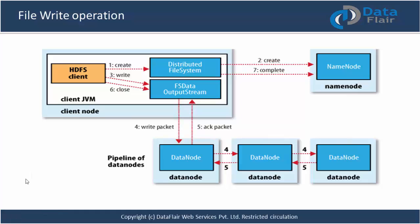Now let's understand the same flow at the API level. The client node has a JVM - a Java Virtual Machine - running on it. The first class coming into the picture is the HDFS client. The client's class sends a create request to the FileSystem API. The FileSystem API sends the create request to the name node. The name node provides the address of the slave data nodes.